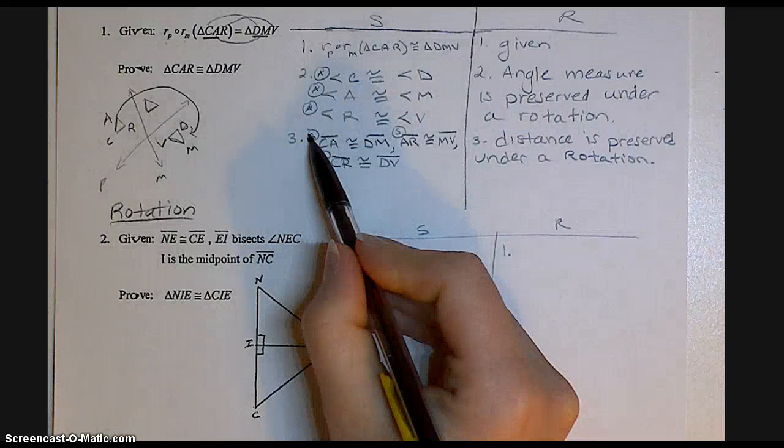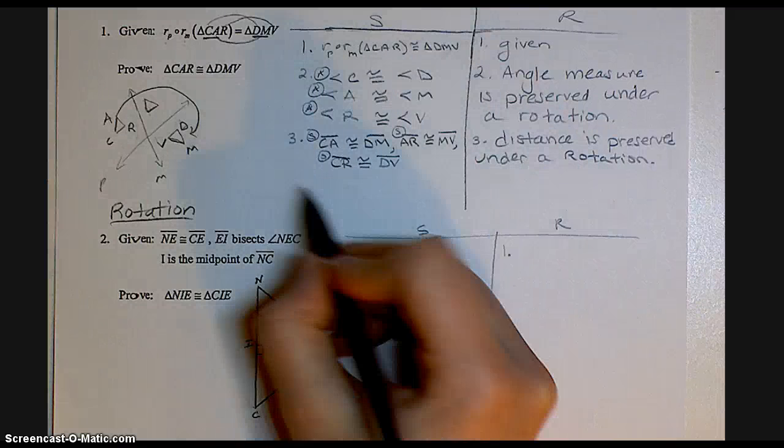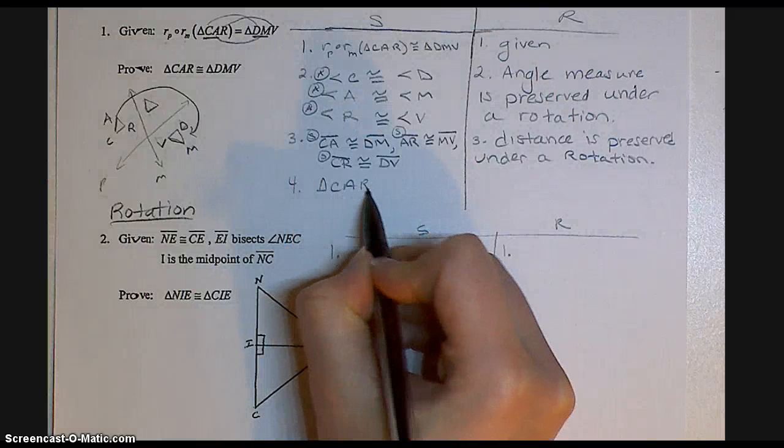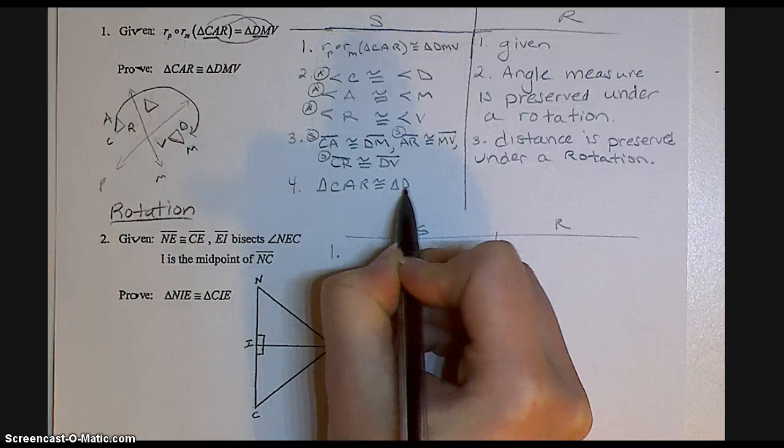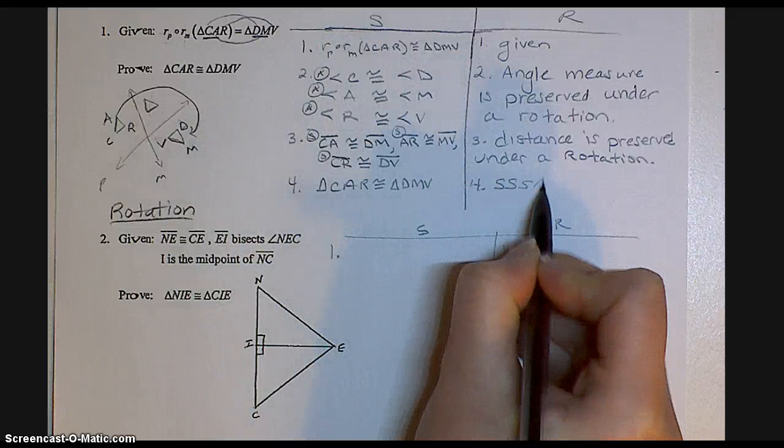So now I've got SSS, three sides congruent. AAA, three angles congruent. So therefore, my triangles have to be congruent. Because of SSS, AAA.